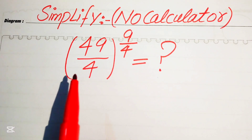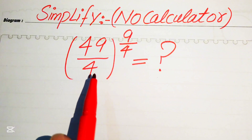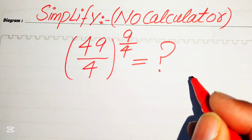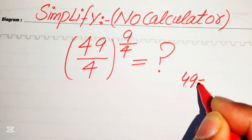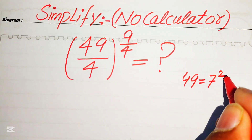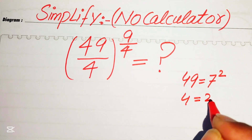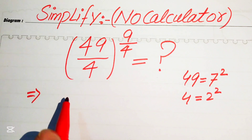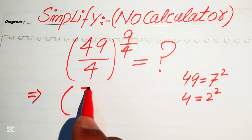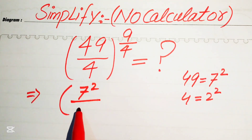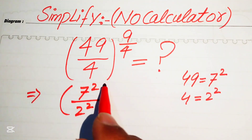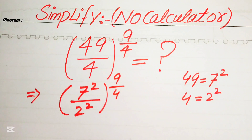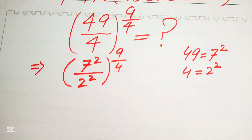First we need to focus on the base of this term. The base is 49 over 4. We know that 49 equals 7 squared and we write 4 as 2 squared. So we put these two values here, and the expression is written as 7 squared divided by 2 squared, with exponent 9 over 4.